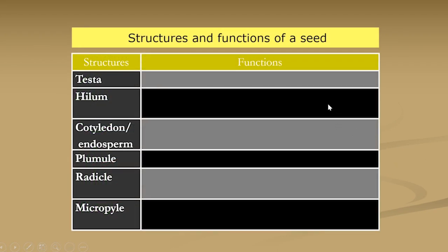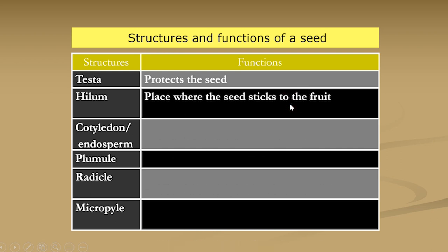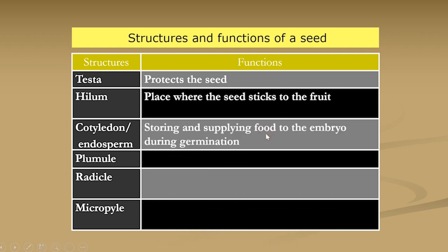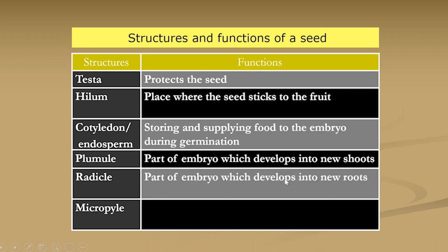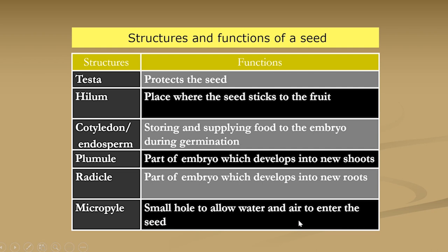The functions of each seed part: the testa is to protect the seed. The hilum is the place where the seed was attached to the fruit. Cotyledons and endosperm store food and supply food to the embryo during germination. The plumule is the part of the embryo which develops into new shoots. The radicle is the part of the embryo which develops into new roots. The micropyle is a small hole to allow water and air to enter the seed.